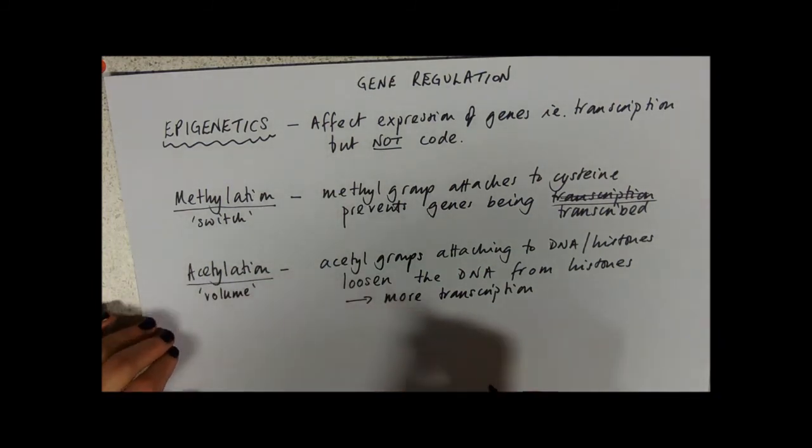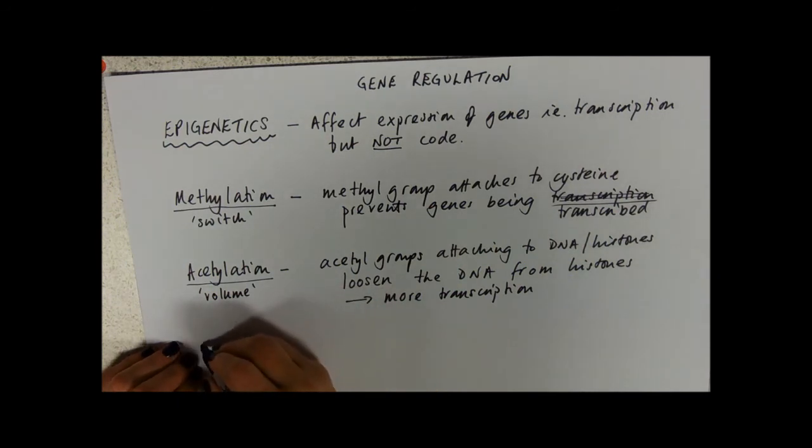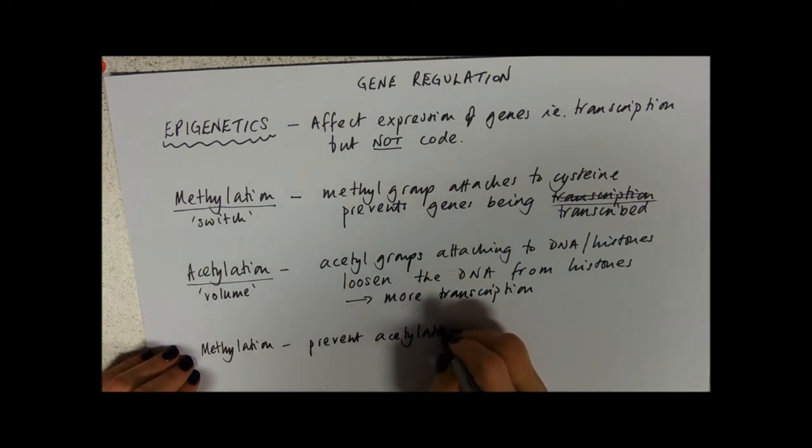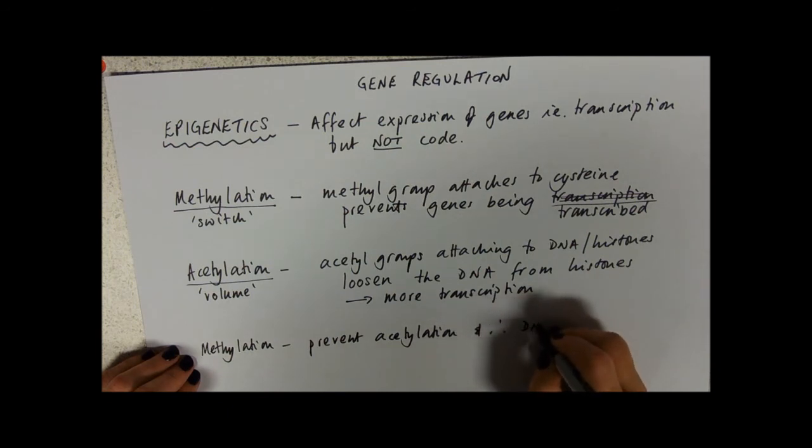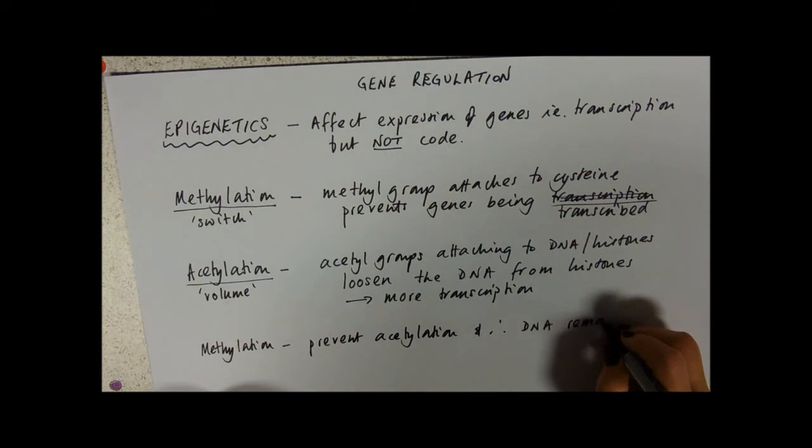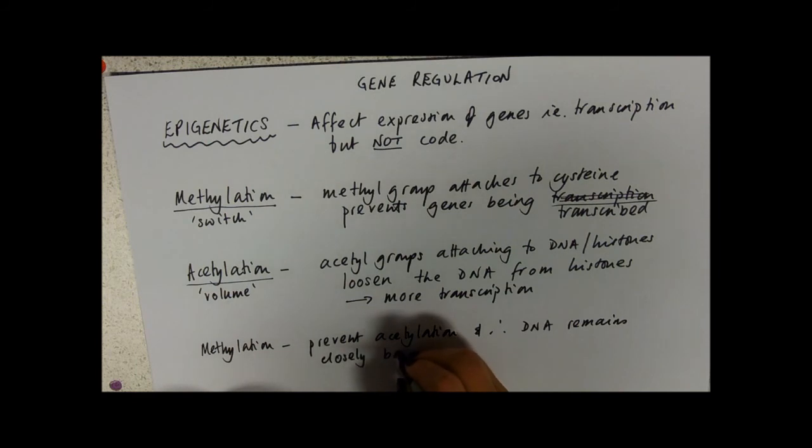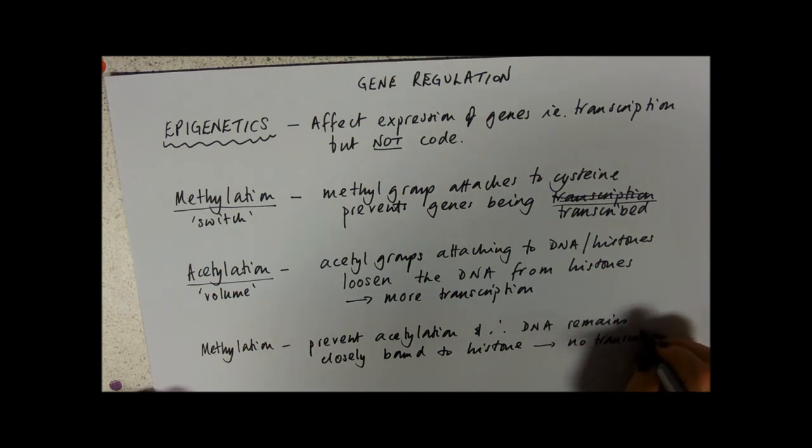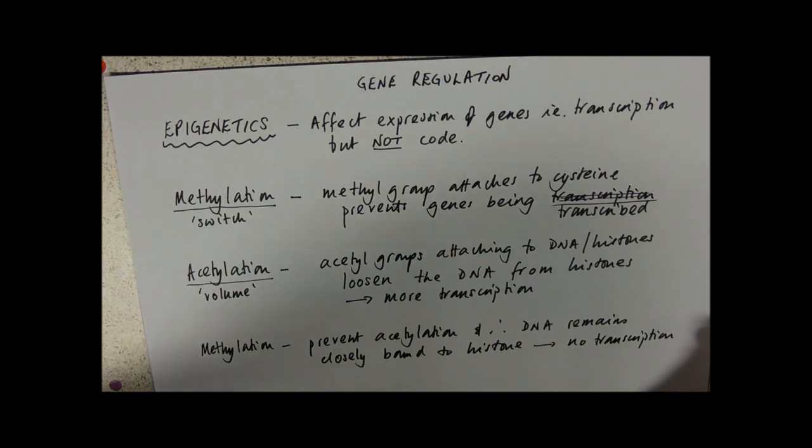Now obviously those two things can go hand in hand because methylation can prevent acetylation. And therefore the DNA would remain closely bound to the histone. And if it's closely bound, then you can begin to get no transcription. So, you know, normal cells, this is going to act like a regulator so that initially when you need a protein you might need quite a lot of it and gradually you'll need less of it and you would tighten up the DNA around the histones to get less transcription.